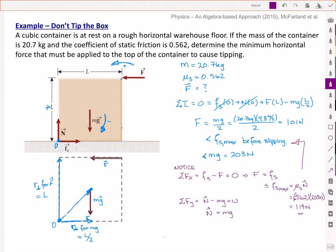And so the minimum horizontal force that must be applied to the top of the container to cause tipping is 101 newtons. And as I showed a step further, the maximum it can be before it would start slipping would be 114 newtons.